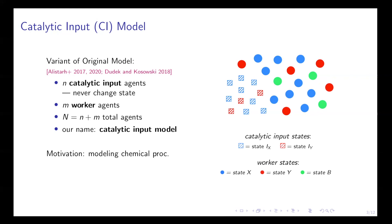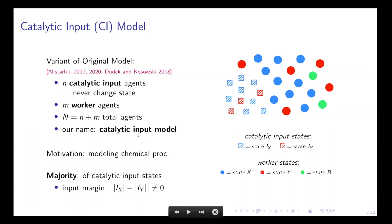To visualize this, whenever two catalytic input agents interact, neither will ever change state. But when a catalytic input and a worker agent interact, the worker agent might change state, but the catalytic input never will. The majority problem in this model extends naturally: we are interested in determining which of the two catalytic input states is more prevalent in the population. The input margin denotes the absolute difference in the count of the two input states, and our goal is to eventually converge to a configuration where every worker reaches some state corresponding to the correct input majority — for example, every worker entering a blue worker state corresponding to a blue catalytic input majority.